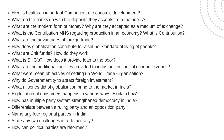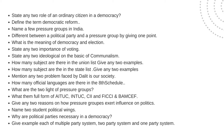Exploitation of consumers happens in various ways — explain how. How does the multi-party system strengthen democracy in India? Differentiate between a ruling party and an opposition party; name any four regional parties in India. State any two challenges in democracy. How can political parties be reformed? State any two roles of an ordinary citizen in a democracy. Define the term democratic reform. Name two pressure groups in India. When do pressure groups align with political parties, giving one point. What is the meaning of democracy in elections?